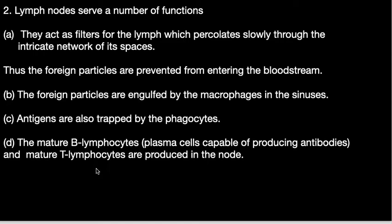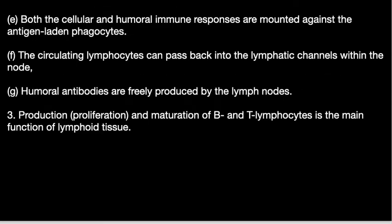The mature B lymphocytes — that is the plasma cells — are capable of producing antibodies, and mature T lymphocytes are produced in the node. Both cellular and humoral immune responses are mounted against the antigen-laden phagocytes. The circulating lymphocytes can pass back into the lymphatic channel within the node, and humoral antibodies are freely produced by the lymph nodes.